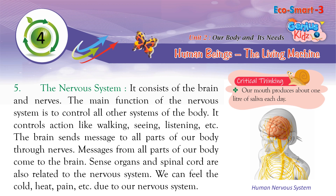The Nervous System consists of the brain and nerves. Its main function is to control all other systems of the body. It controls actions like walking, seeing, listening, and more. The brain sends messages to all parts of our body through nerves, and messages from all parts of the body come back to the brain. Sense organs and the spinal cord are also related to the nervous system. We can feel cold, heat, and pain due to our nervous system.